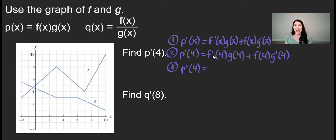So to find p prime of 4, I would first find f prime of 4. That means I am going to look on the f graph, and I am going to find the derivative or the slope of the tangent line at an x value of 4. To do that, I must find the slope of this line segment from here to here.